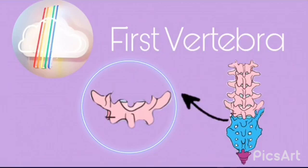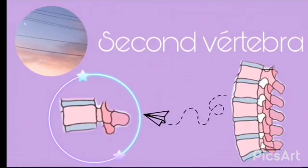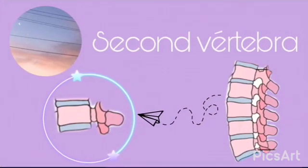Second lumbar vertebra: it can only be recognized if you have the previous vertebra. This is due to their thickening in size, and they are considered to be from the same individual.